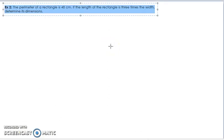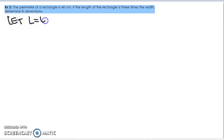So this will be the last example for this lesson and last example for all of chapter 3. This example right here, we're looking at the perimeter of a rectangle. And this perimeter of a rectangle is 48 centimeters if the length of the rectangle is 3 times the width, determine its dimensions. Or in other words, determine what the length is and what the width is. So first things first, we'll let L equal length, and we'll let W equal width. L for length, W for width.